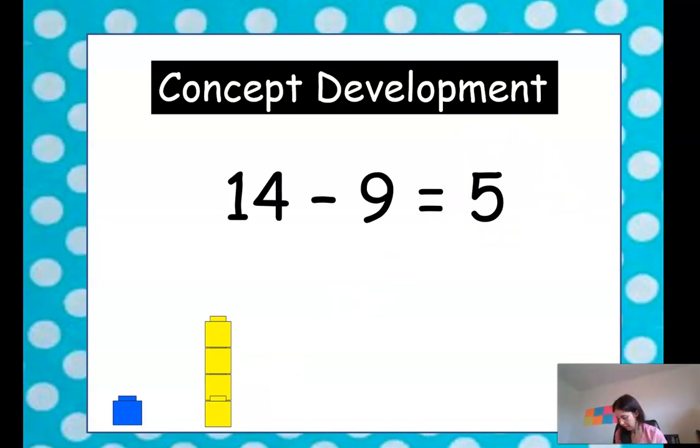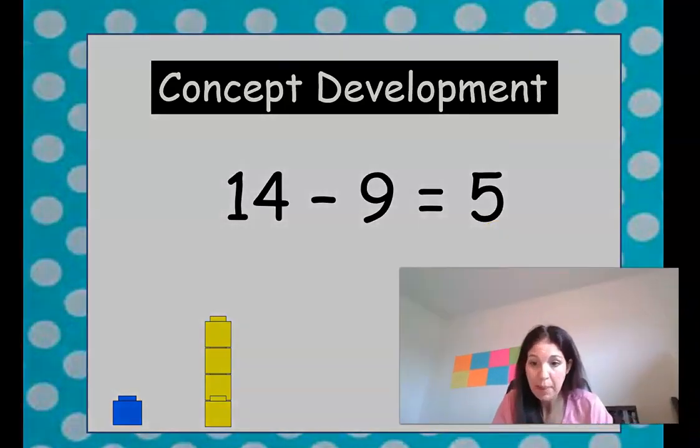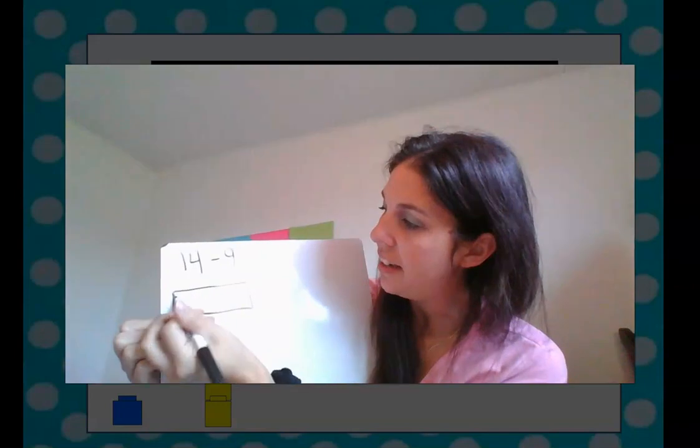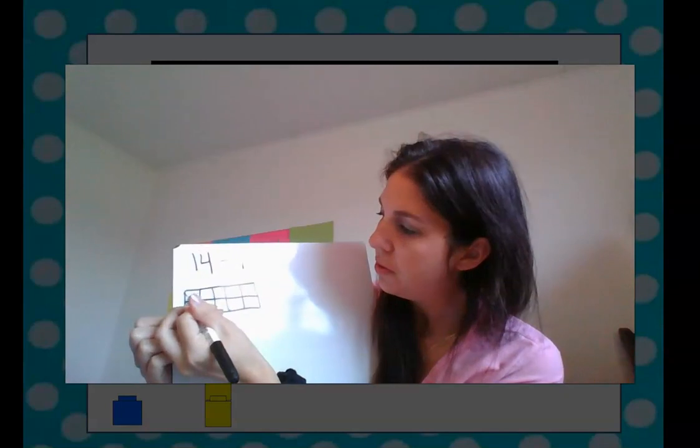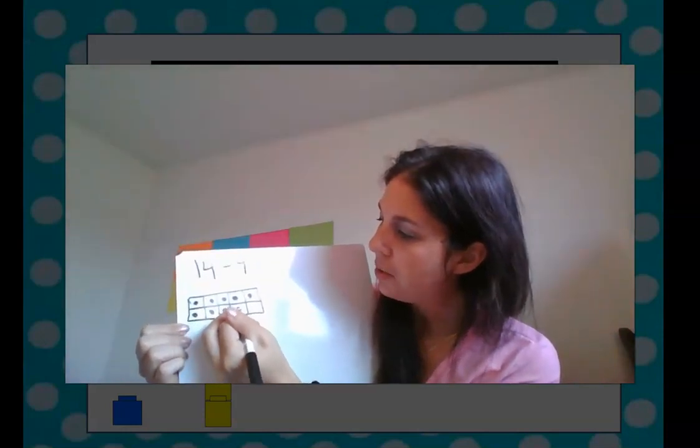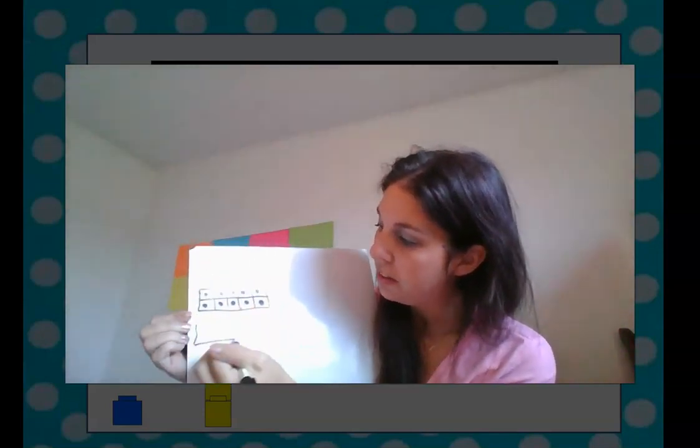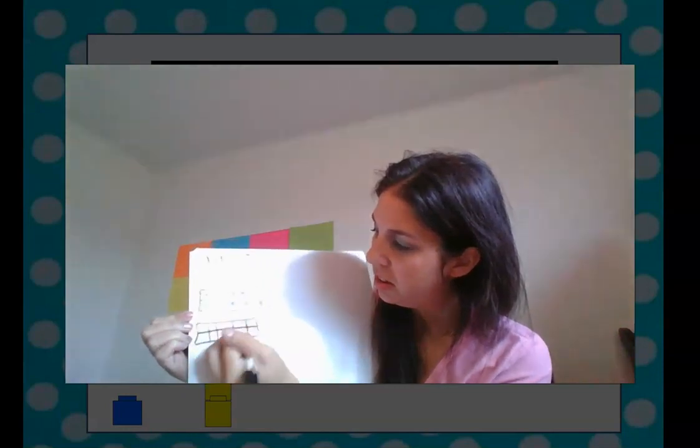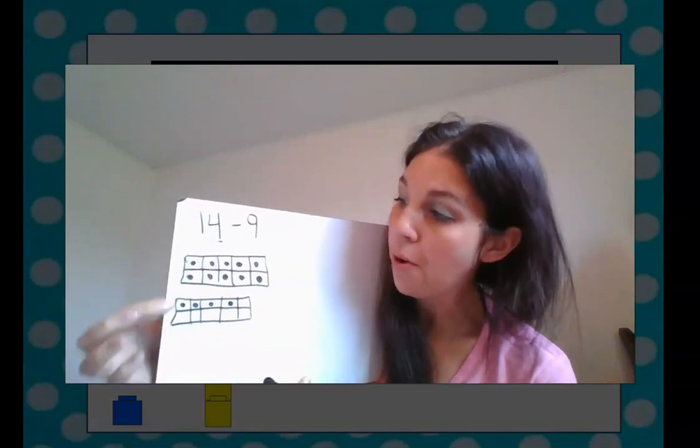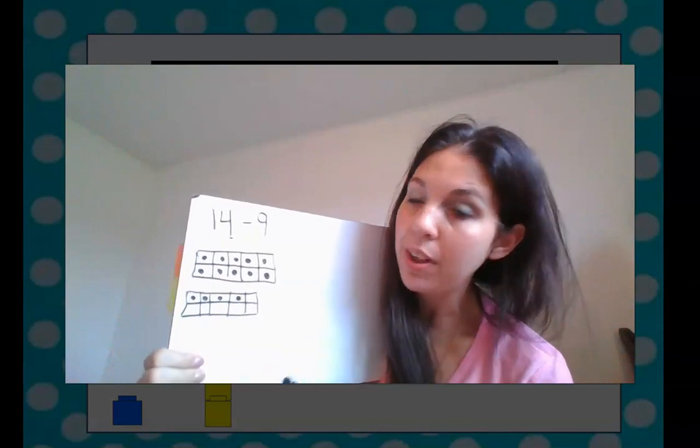Let me show you how we can solve this on my whiteboard. Let's draw it out. 14 minus 9. Because you may not have blocks at home, but you have paper that you can draw it. So, 14 minus 9. The first step is we're going to draw a group of 10. 1, 2, 3, 4, 5. And this is called a 10 frame. We're going to fill it with 10. And then we still need 4 more. 1, 2, 3, 4.